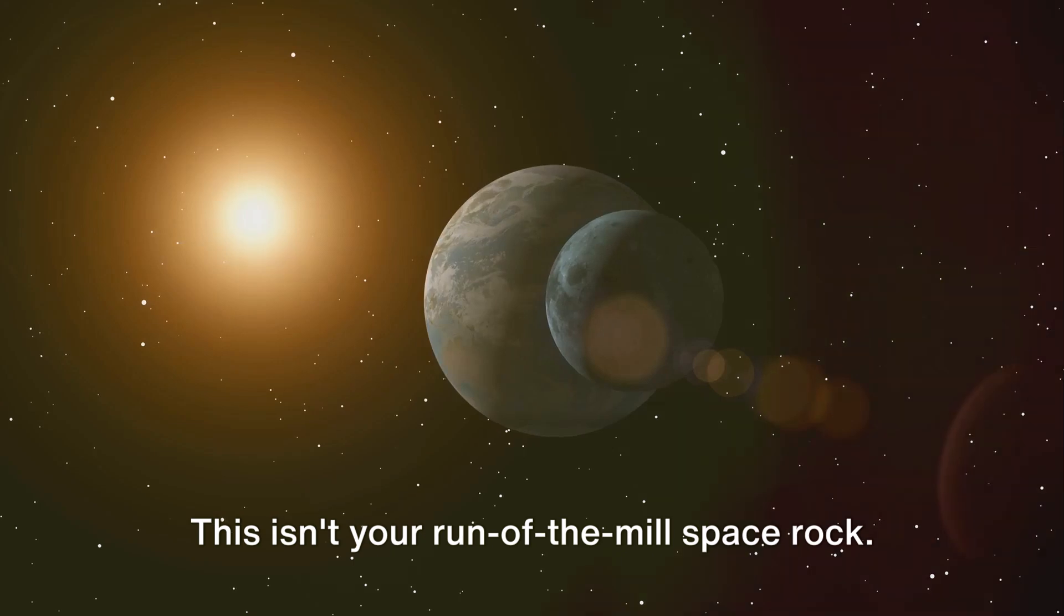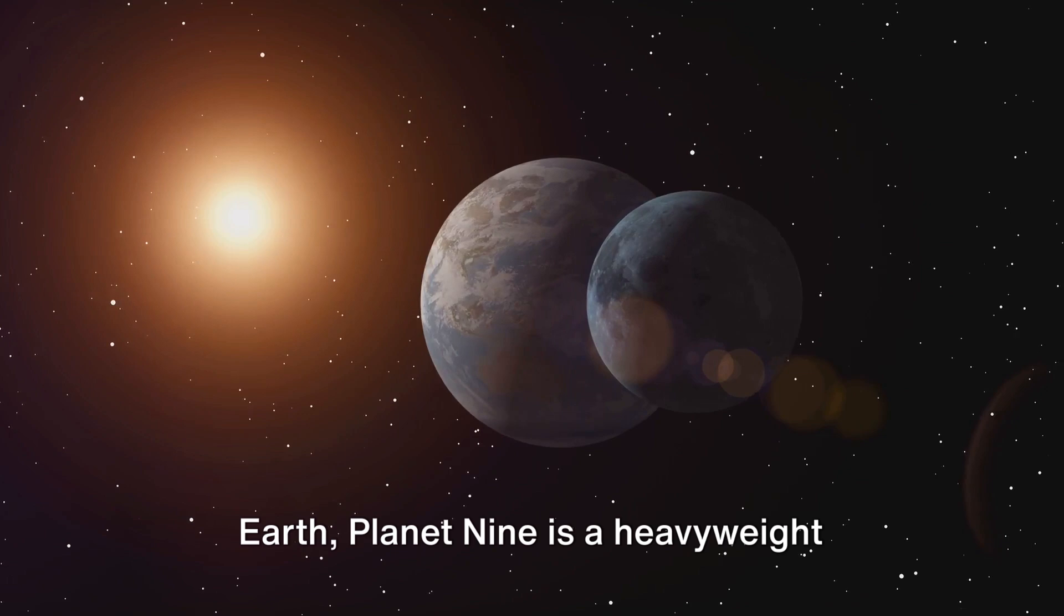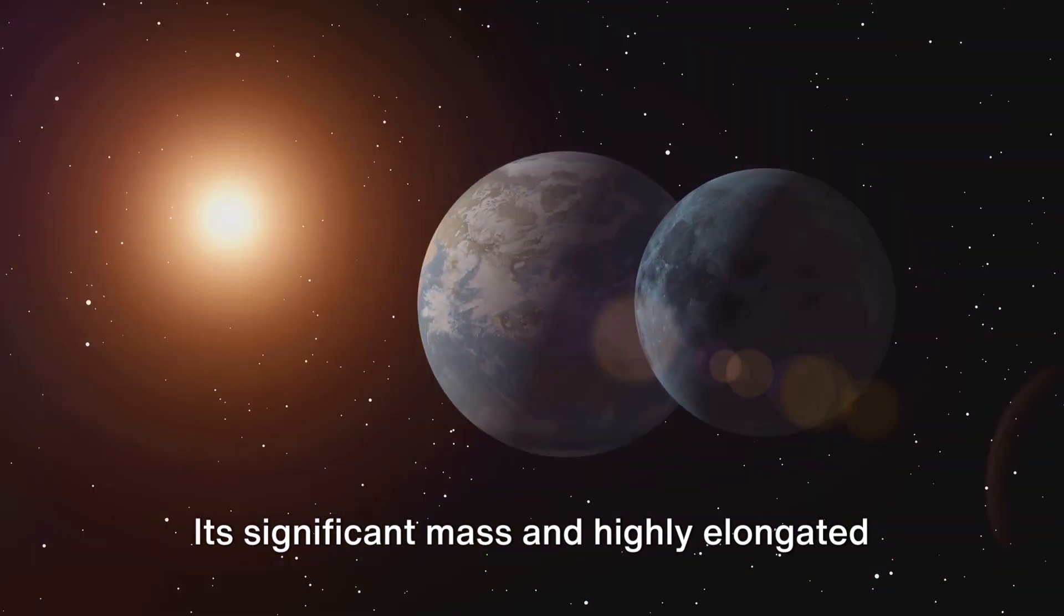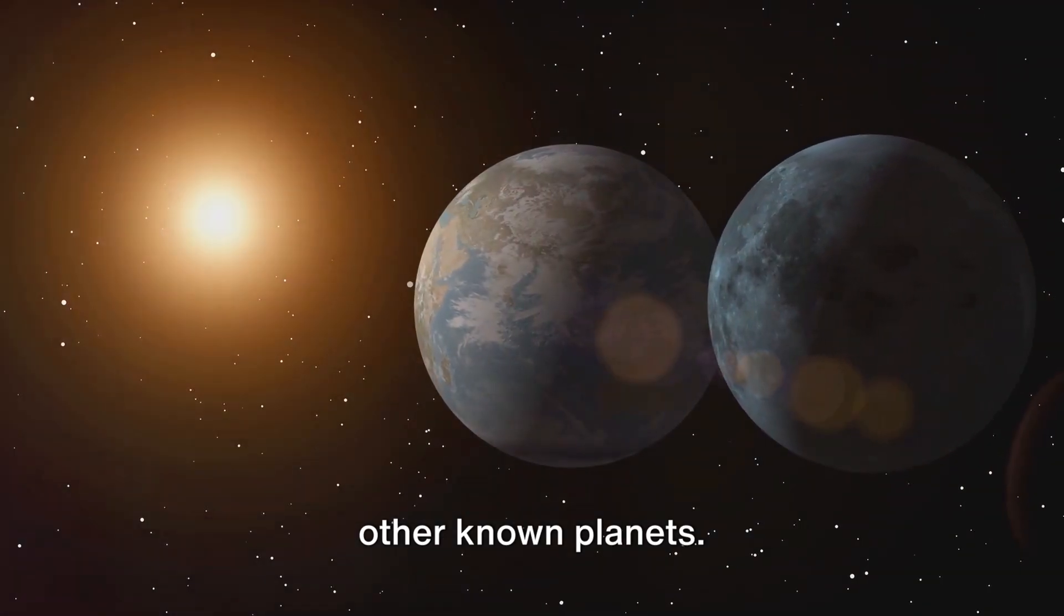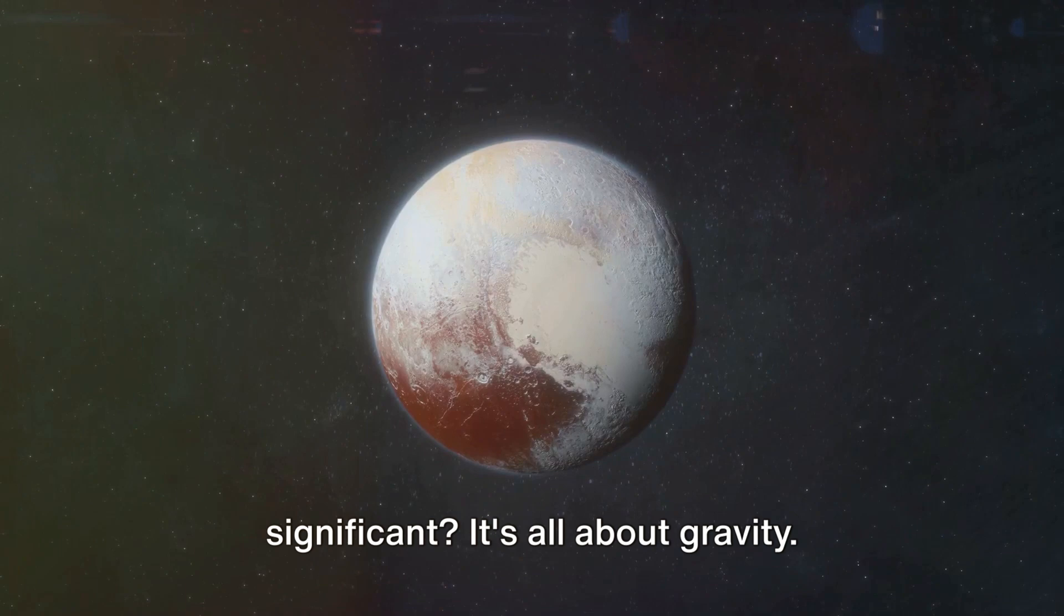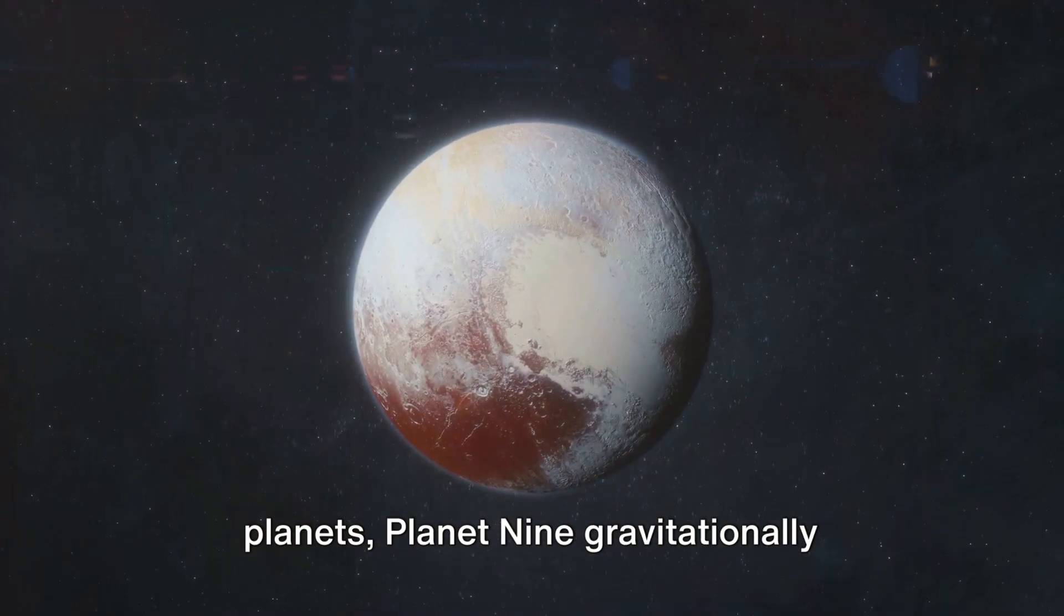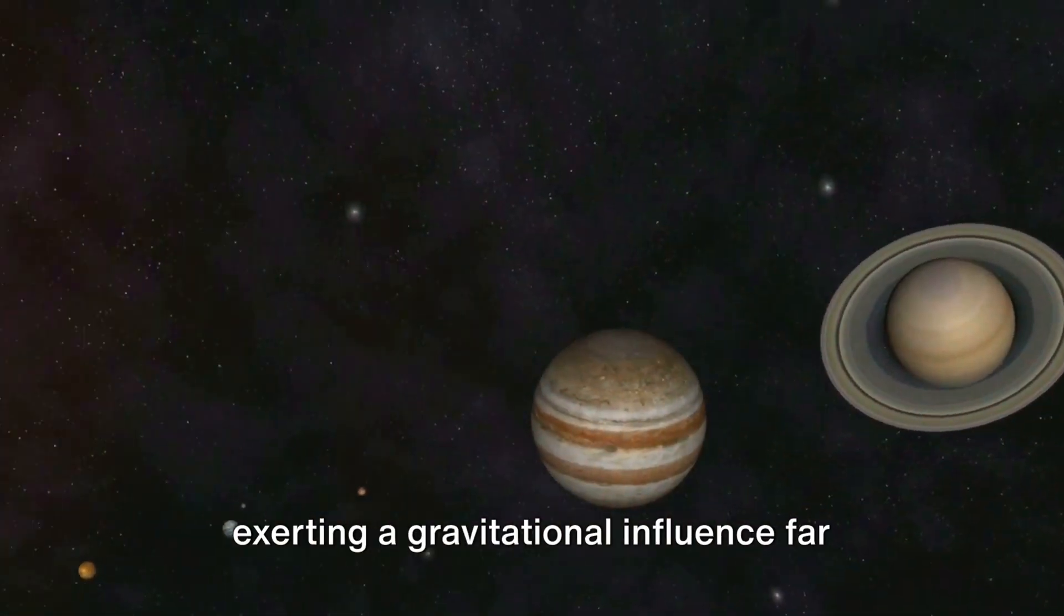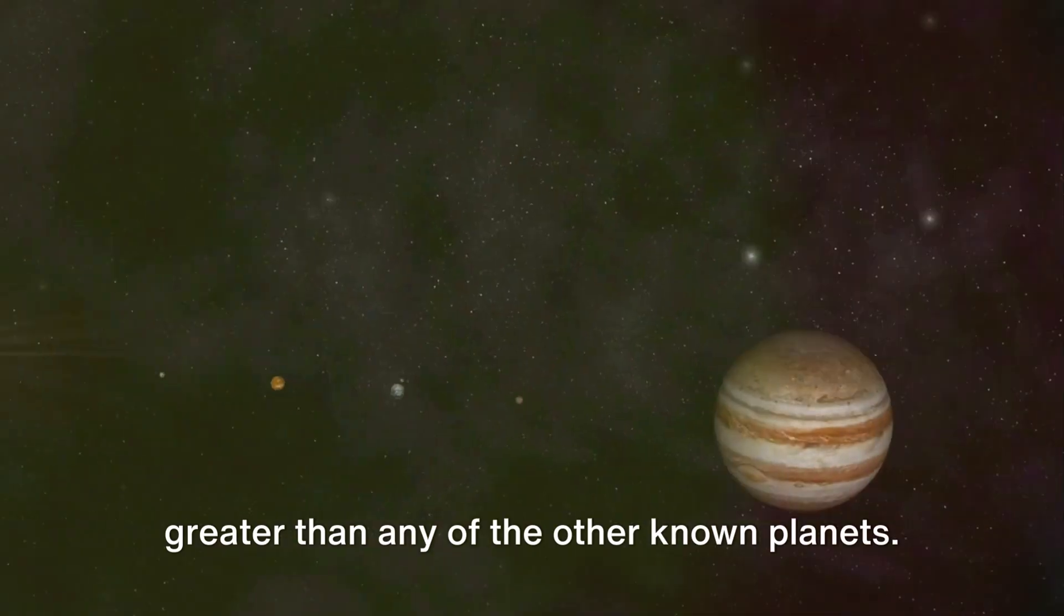This isn't your run-of-the-mill space rock. With a mass about ten times that of Earth, Planet Nine is a heavyweight contender in the solar system. Its significant mass and highly elongated orbit around the sun set it apart from other known planets. But what makes Planet Nine truly significant? It's all about gravity. Unlike smaller objects known as dwarf planets, Planet Nine gravitationally dominates its corner of the solar system. It's like the neighborhood bully, exerting a gravitational influence far greater than any of the other known planets.